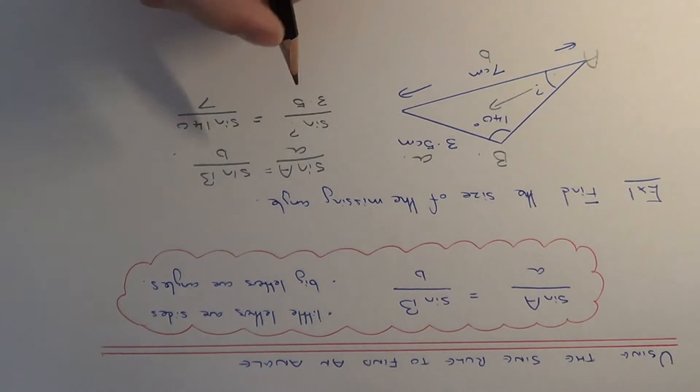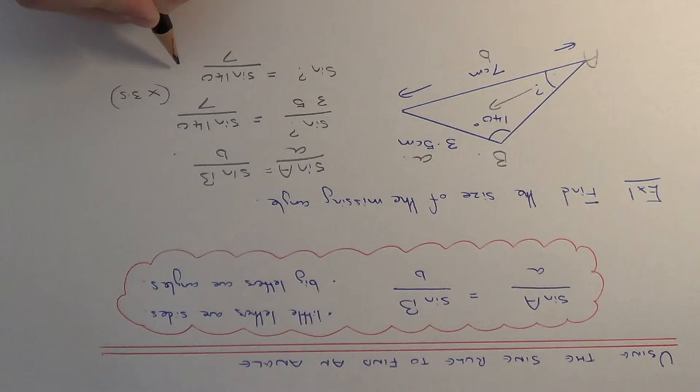We just now need to do our inverse operations. To find question mark then we need first of all to times both sides by 3.5. This will give us sin question mark equals sin 140 over 7 times by 3.5.